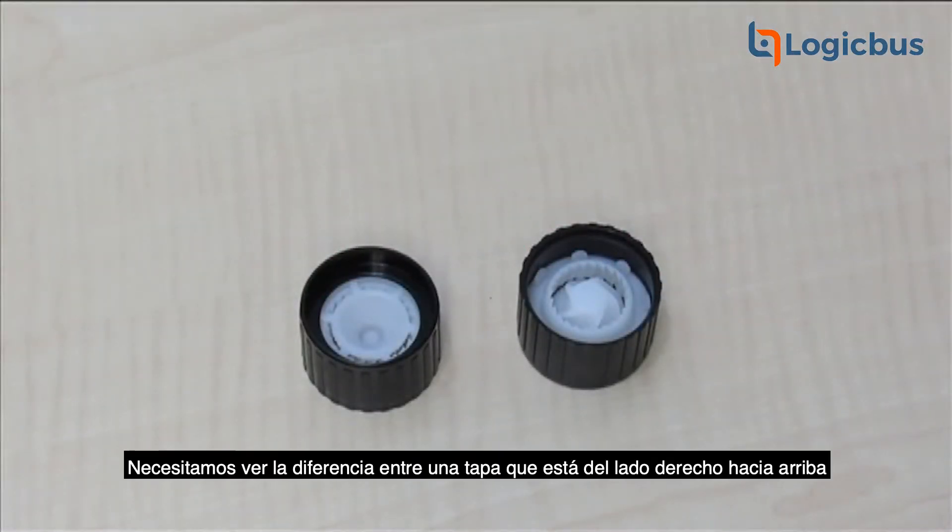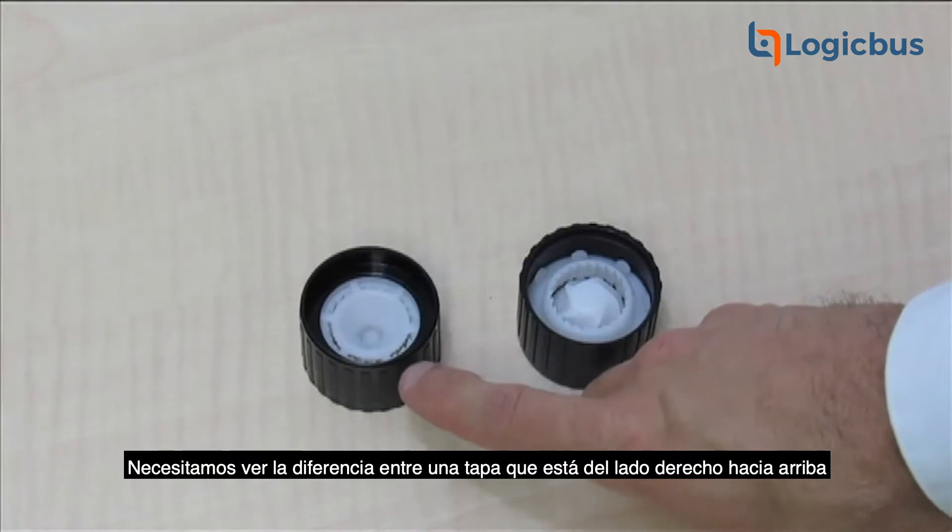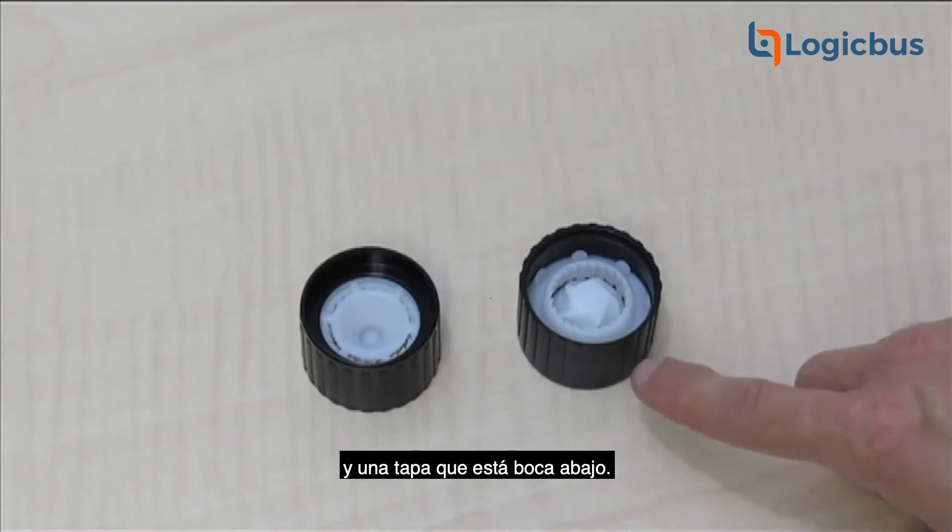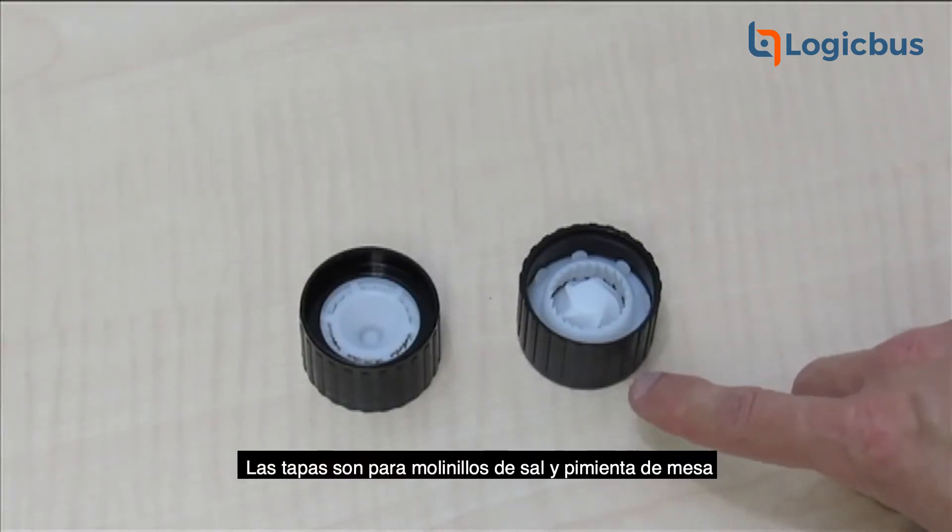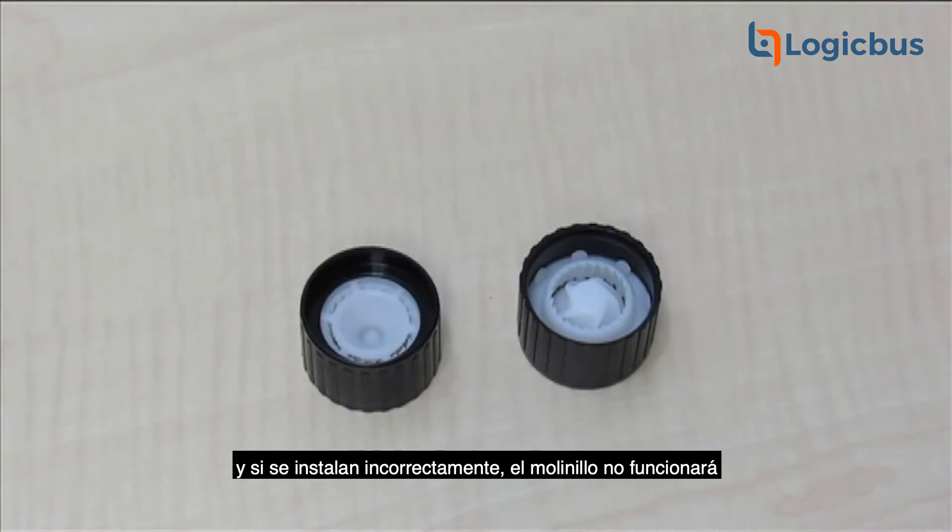In this application we need to see the difference between a cap that is right side up and a cap that is upside down. The caps are for tabletop salt and pepper grinders and if they are installed incorrectly the grinder will not work.